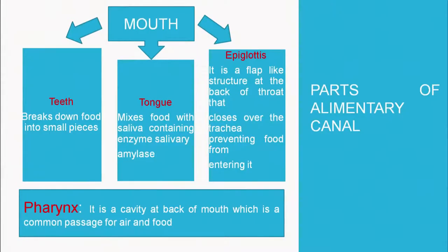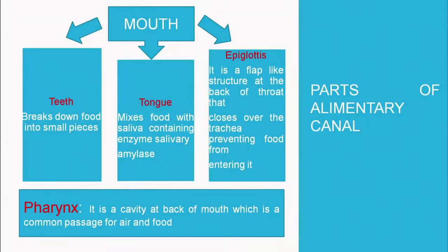The first structure is the mouth, which contains teeth that break down food into smaller particles to increase surface area so enzymes can act on it more effectively. The tongue mixes food with saliva, which contains the enzyme salivary amylase. This enzyme works at a pH of around 7 to 8 and helps in breaking down carbohydrates.